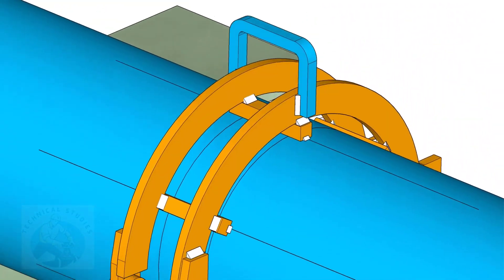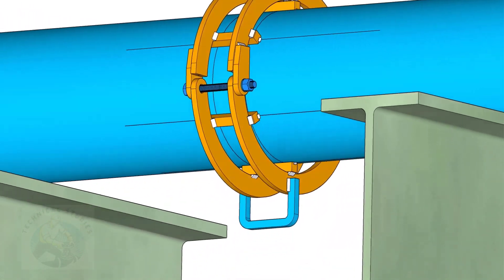After welding, cut the tacks with pipe and the square bars. Grind smooth all parts.